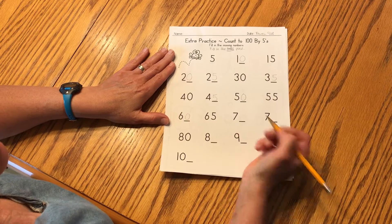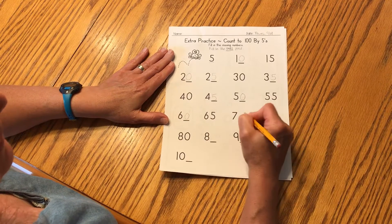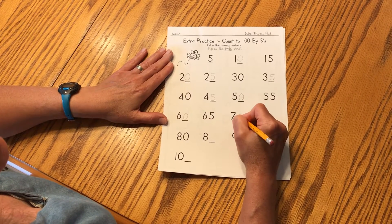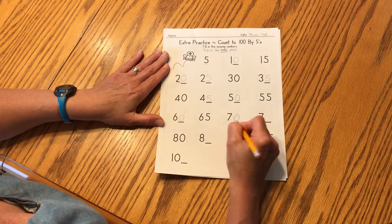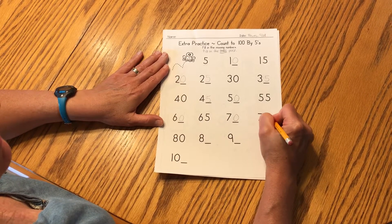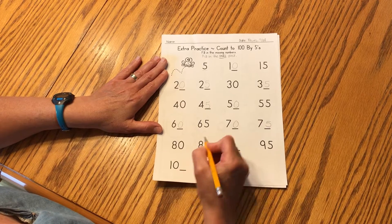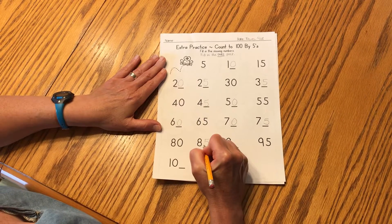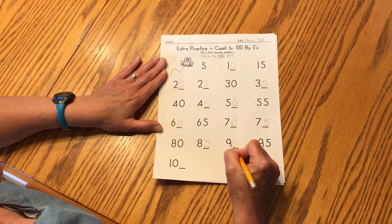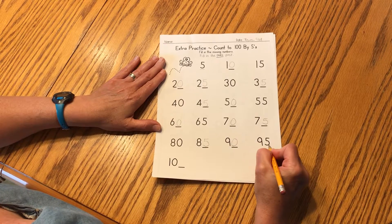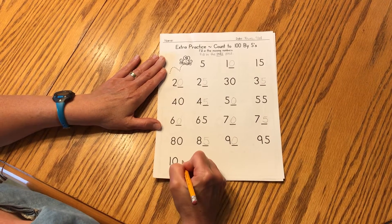All right, so we have sixty, sixty-five. Now it's time for a zero, which would be seventy, then seventy-five, eighty, eighty-five, ninety, ninety-five, one hundred.